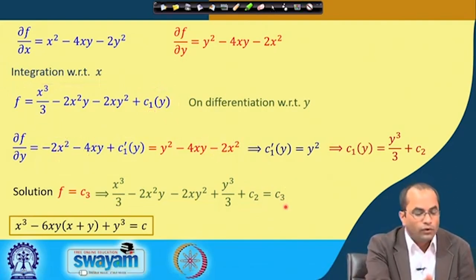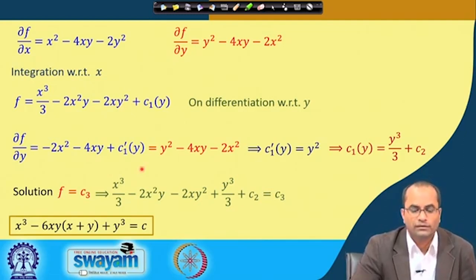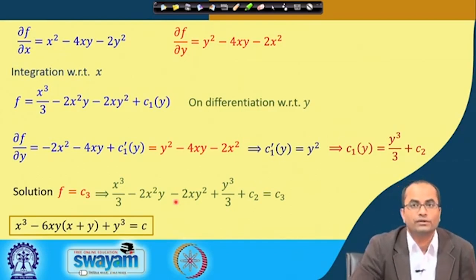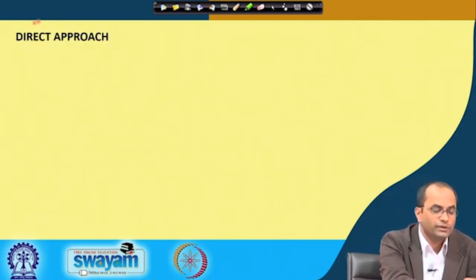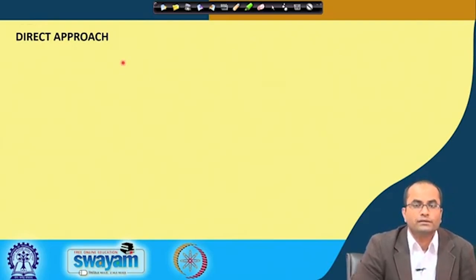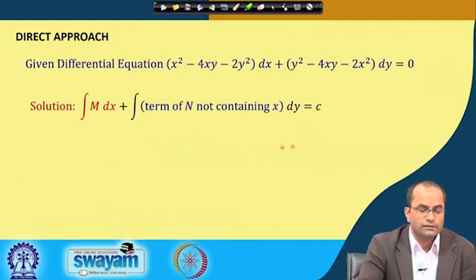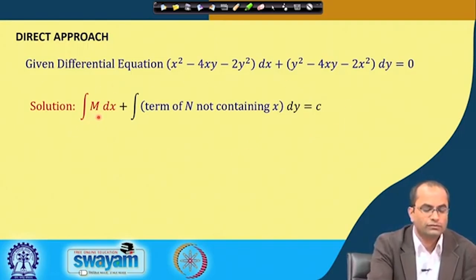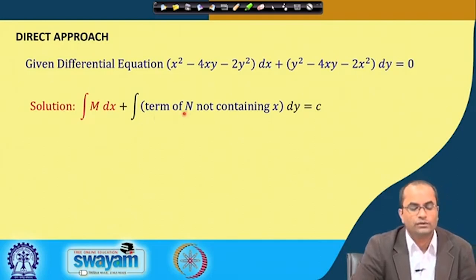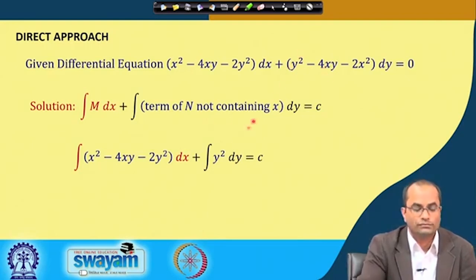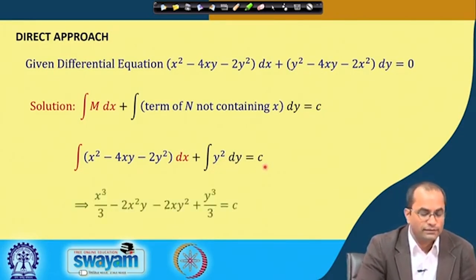We can also use the direct formula. For the same differential equation, the solution is ∫M dx + ∫(terms of N not containing x) dy = c. Here M is integrated with respect to x, and from N = y² − 4xy − 2x² the only term not containing x is y². So we add ∫y² dy = y³/3, giving exactly the same solution as before.